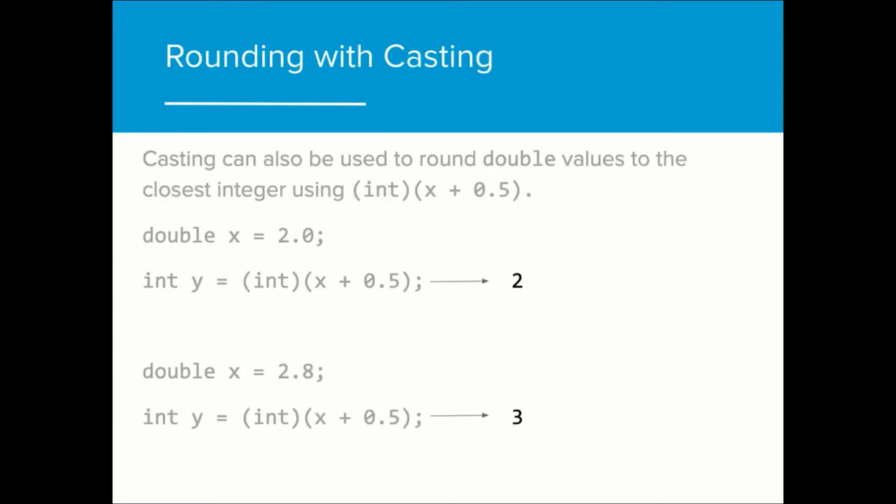We can also use casting to help round double values to the closest integer value. We can do that by using the expression int(x + 0.5). This works because any decimal value at 2.5 or higher will become a value of 3.0 or higher, and any value below 2.5 will still remain below 3.0. Because ints round down, the value of y in this case will always be the correct rounded value.